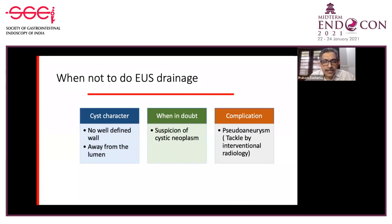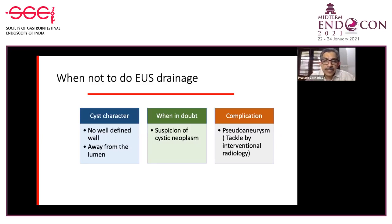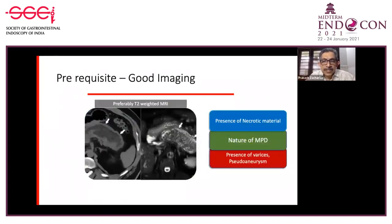If the cyst character is not well defined, or if the cyst is away from the lumen and not accessible, one should not go for EUS drainage. If there is doubt regarding the cyst—whether it is a cystic neoplasm—that should be confirmed before doing any procedure. If there is a complication like pseudoaneurysm, this should be tackled by interventional radiology before embarking on EUS drainage.